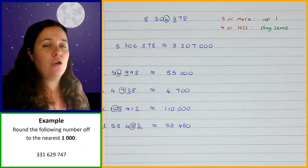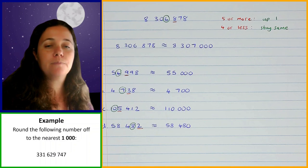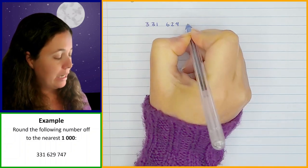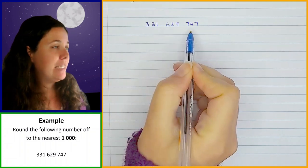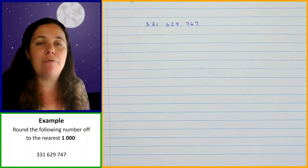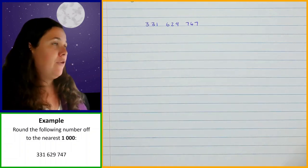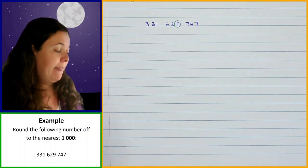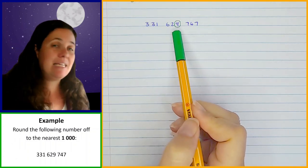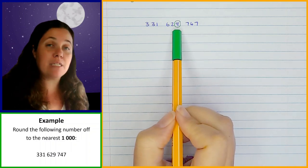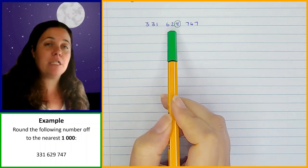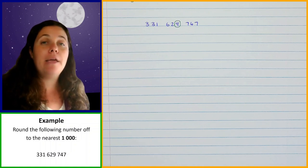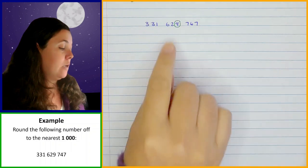Now let's look at a slightly different example. We have the number 331,629,747 and need to round off to the nearest thousand. You might think this is basically the same, and it is — but there's a slight difference. If we look at the digit in the thousandth position, it is a nine. Anytime you're rounding off and the digit in that position is a nine, you have to be careful, because if it goes up one, you end up with 10, which is going to be a problem.